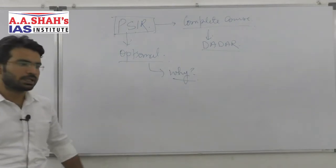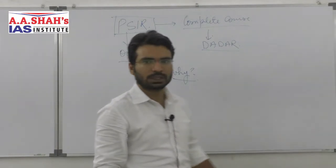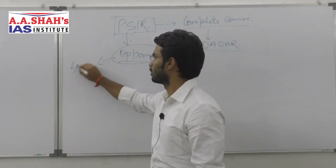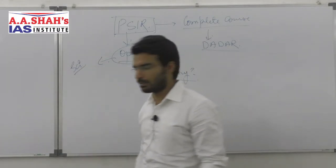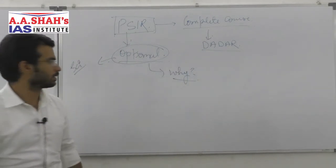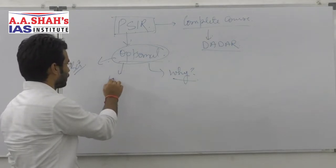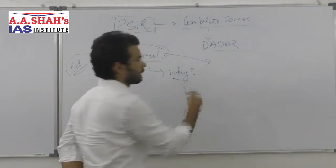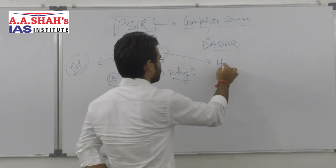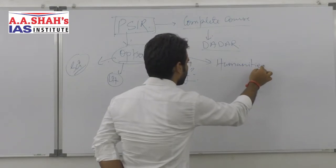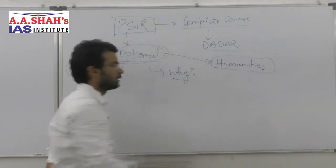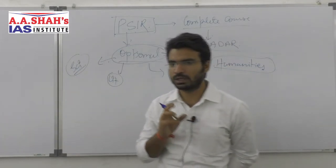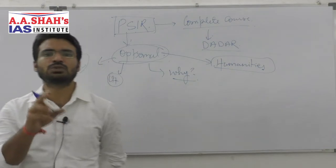There are three major areas from where you can take the optional subject. One is from the science background — technical subjects like mechanical engineering. Another is taking an optional related to UPSC literature. And the most common options taken are from the humanities. Within humanities, it is very important to understand why you are choosing a particular subject.